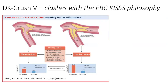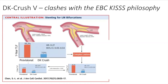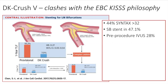That stemmed from the excellent work from Chen's group in China — DK Crush 5 — a comparison of provisional against DK crush in left main, which highlighted the superiority of the DK crush technique in expert Chinese hands. The greatest benefit was seen in complex lesions where the side branch circumflex had a lesion length more than 10 millimeters and a very severe diameter stenosis.